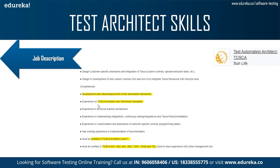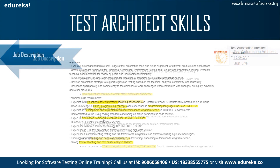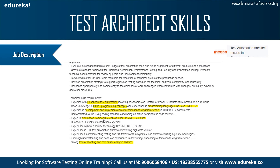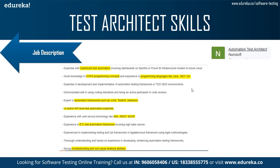The skills required for test automation architect at CEDO include expertise in dashboard test automation, OOP programming concepts, programming languages like Java, .NET, and C#, and development expertise in automation testing frameworks like JUnit, TestNG, and Selenium, as well as troubleshooting and root cause analysis ability. Similarly, the automation test architect job at Neurosoft requires expertise in dashboard test automation, OOP programming concepts, Java, .NET, and C#, automation frameworks such as JUnit, TestNG, and Selenium, UI and API level test automation expertise, XML, REST, SOAP, experience in ETL Test Automation Framework, and troubleshooting and root cause analysis ability.